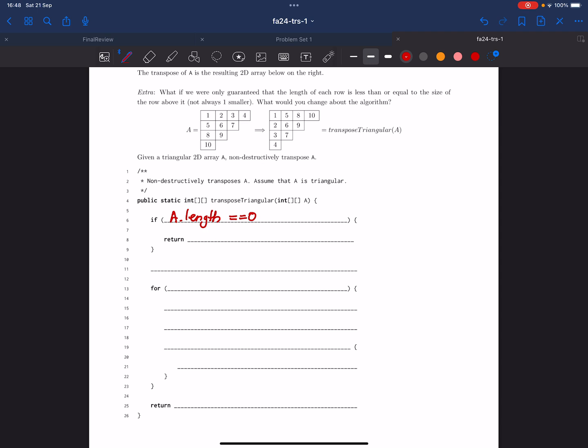Whenever our variable A doesn't contain any values to transpose, we should return a new integer array that doesn't contain anything, which can be done by using this syntax. We're saying that the number of x coordinates is going to be zero. We will specify the number of y coordinates in our second box.